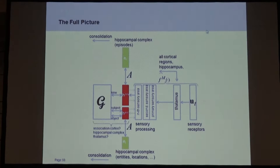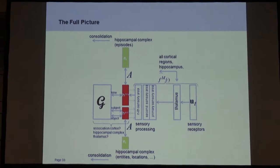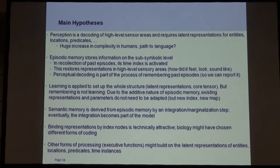This is a fuller picture: here's the sensory input, here's the thalamus, here are the sensory levels, here's a representation of time which gets an index neuron in the hippocampal area, and then the core tensor uses representations for subject and object to make statements about interpretation of a scene. These representations are probably also formed for entities in the hippocampal complex — like the Jennifer Aniston neurons — and are probably also consolidated in the neocortex at some point. So perception is a decoding of high-level sensory areas and requires latent representations for entities, locations, and predicates.